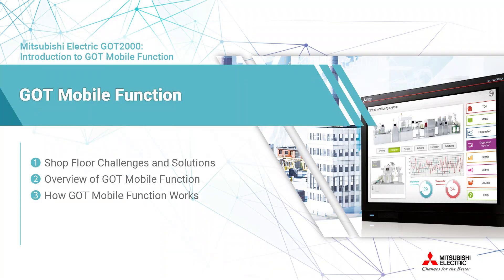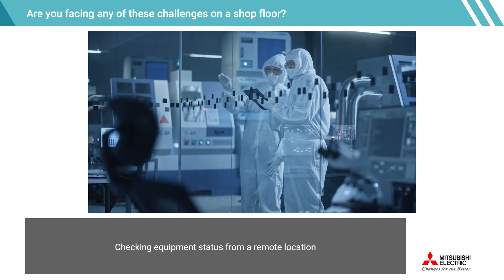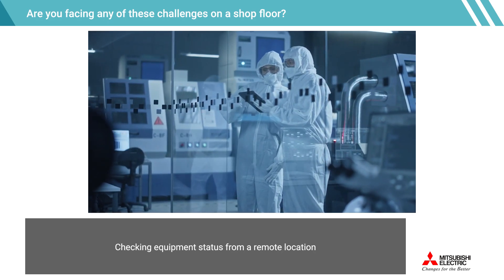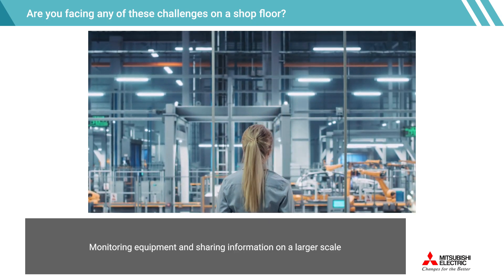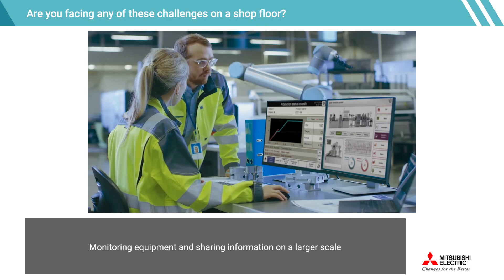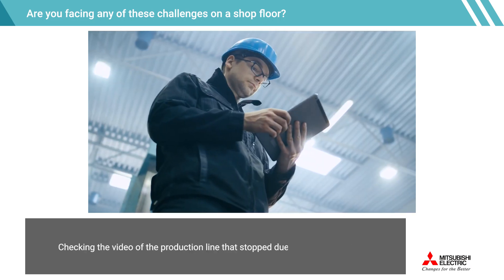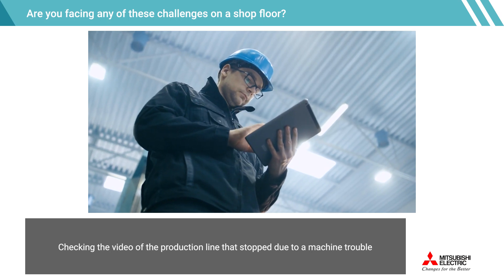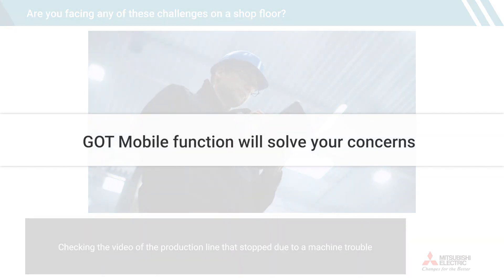This video offers an introduction to the GOT mobile function. It addresses key concerns such as checking equipment status from a remote location, monitoring equipment and sharing information on a larger scale, monitoring errors without going to the shop floor, and checking the video of a production line that stopped due to machine trouble. The GOT mobile function will solve these concerns.